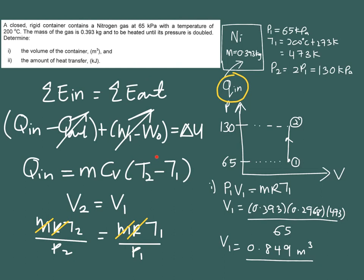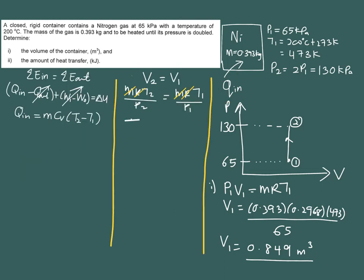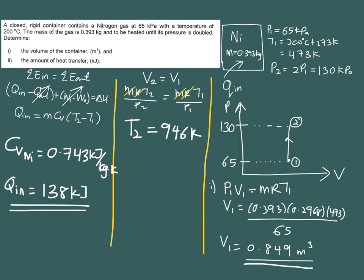Now when you rearrange the above so you are going to have your T2 is equal to 946 kelvin. So you plug in this value inside this equation, all right? So the value of your specific heat at constant volume for your nitrogen you can get from your property table. Okay, so this is the value and you plug in everything known value inside this equation and finally you will obtain your Q in is equal to 138 kilojoule. So remember the final step in problem solving is to discuss or verify your findings.